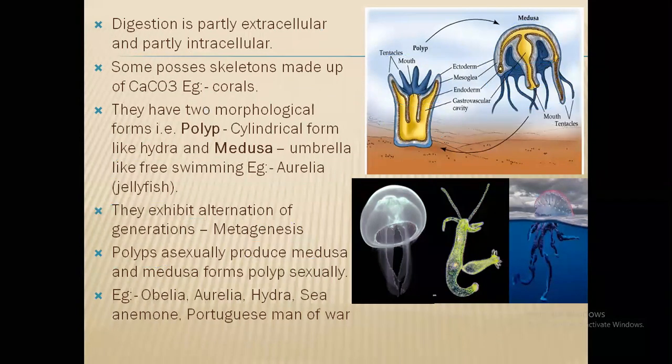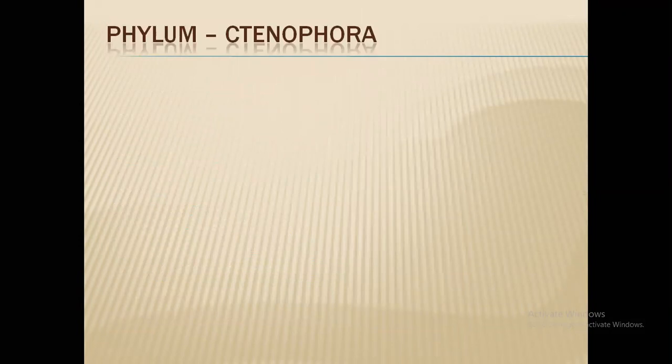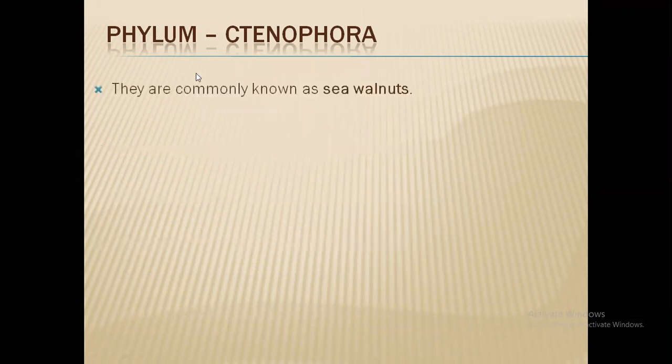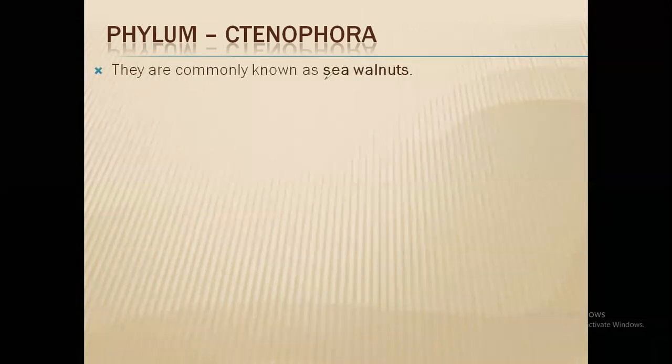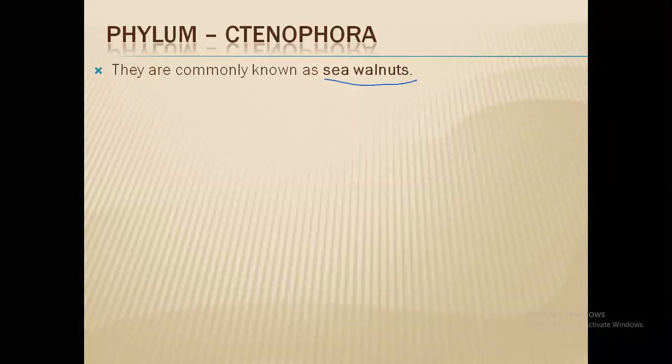Now let's move on to the next phylum of the animal kingdom, which is Ctenophora. Ctenophora is a less well-known phylum because it was recently discovered. Initially, Ctenophora was included in Coelenterata because they resemble jellyfish, but they have very different properties, so they were given a separate phylum called Ctenophora. They are commonly known as sea walnuts because of their appearance — they look like walnuts.